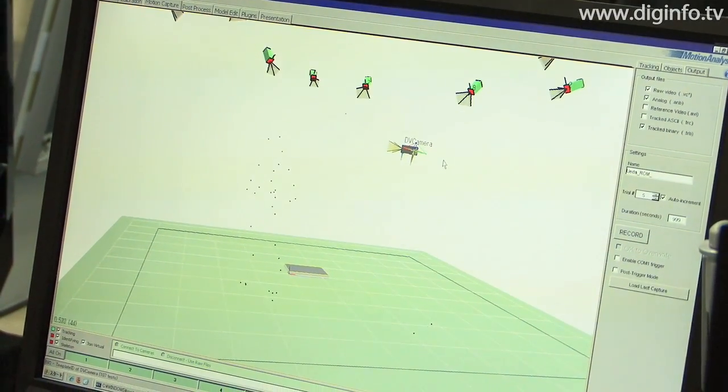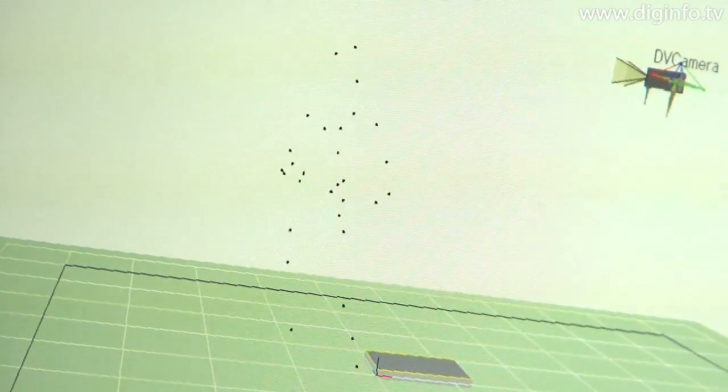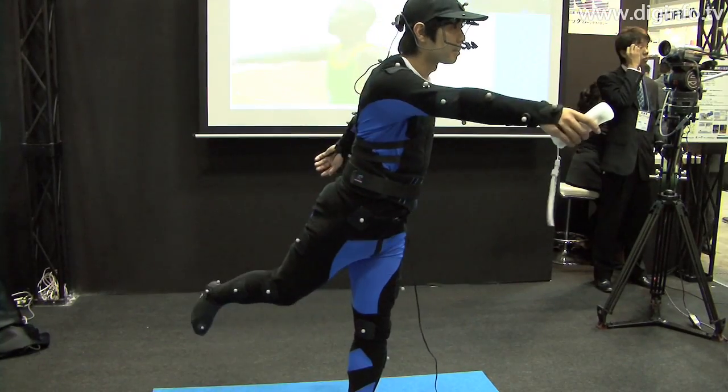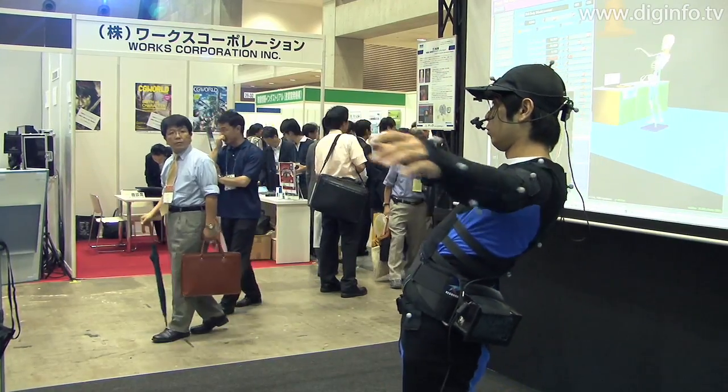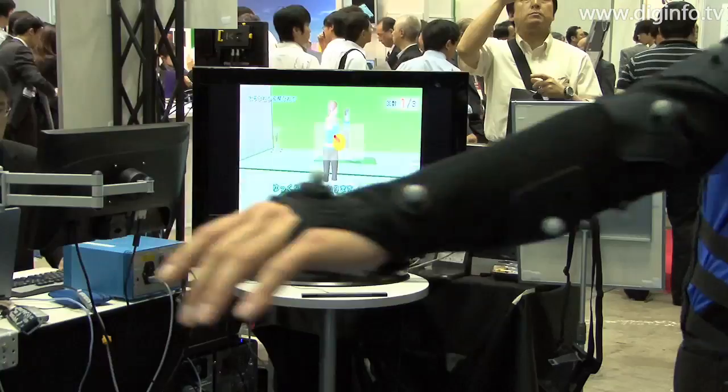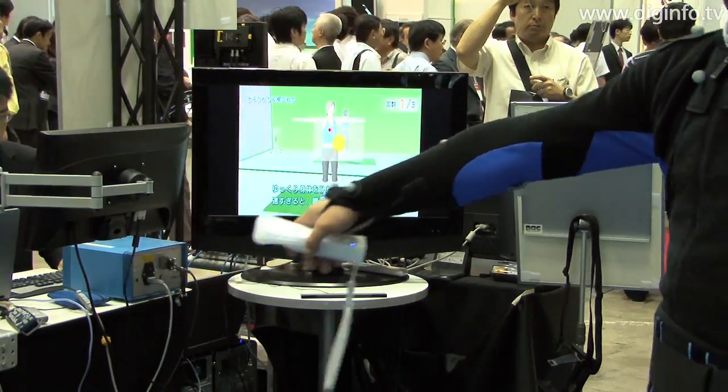At least two cameras are required for true 3D motion capture. This system uses 10 infrared cameras to capture the reflective markers affixed to the body. The photographed movements are displayed as lines and output to CG software such as SIM.